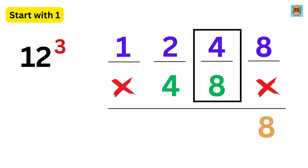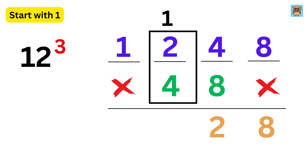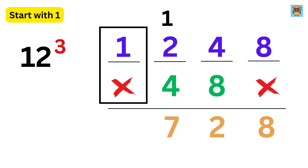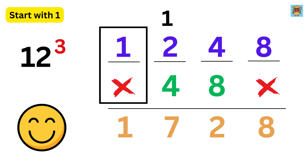Finally, add all these numbers as in simple addition. This gives 8, then 8 plus 4 is 12 so write 2 and carry 1, then 2 plus 4 is 6, add the carry to make 7, and finally write the 1. 12 cubed is 1728.